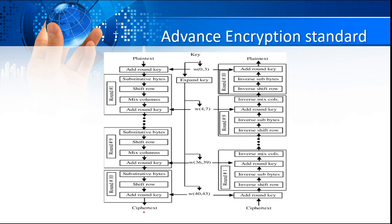When we talk about the reverse — decryption — it works exactly the same way in reverse. We start with the cipher text, apply Add Round Key using words W42–W43, then go through the inverse steps: inverse Shift Row, inverse Substitute Bytes, and Add Round Key. Round 10 in decryption also skips the Mix Column step, and finally it produces the plain text.